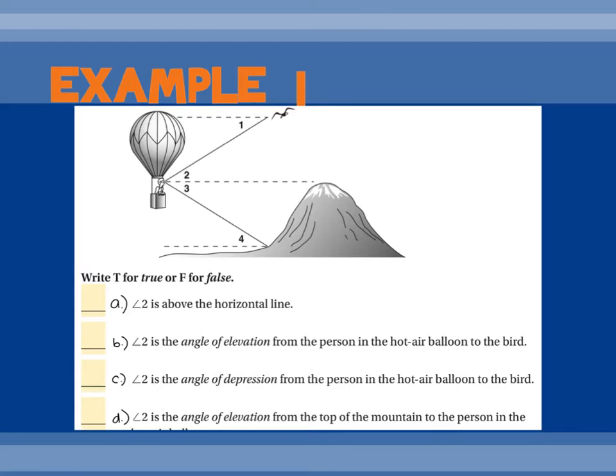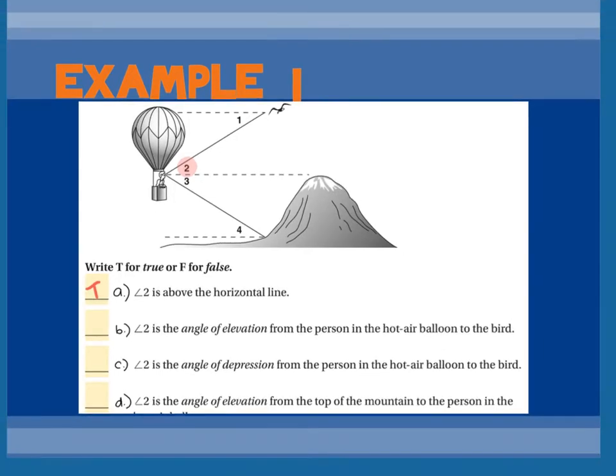So here's just like baby stepping into it. It says true or false. Angle two is above the horizontal line. So angle two is here. Is that above the horizontal line? Yes, that's true. B says angle two is the angle of elevation from the person in the hot air balloon to the bird. Here's my person, here's the bird. Is angle two from this person's eye level up to where it sights the bird? Yes. So that's true.